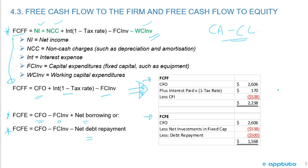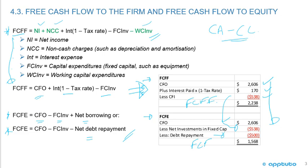Using the numbers from the text: cash flow from operations was 2,606, plus interest times one minus the tax rate, minus cash flow from investing, gave us free cash flow to the firm. For free cash flow to equity, we start with CFO, subtract net investments in fixed capital, and subtract the debt repayment of 500, giving us our free cash flow to equity.